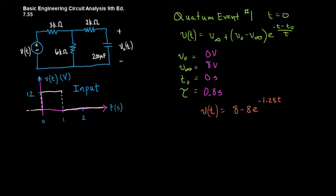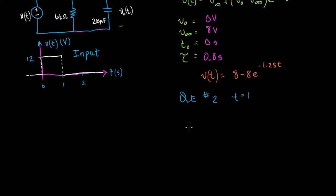Now let's look at quantum event number 2. And that happens at t equals 1. We have the same set of questions to answer. What's V0? What's V at infinity? What's T0? And what's tau? We already know tau. 0.8 seconds. Nothing's changed there. T0 equals 1.